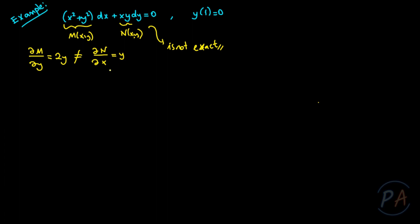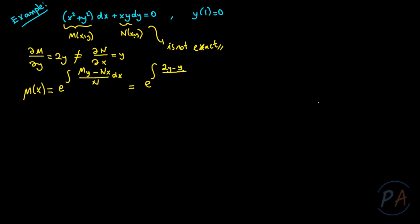Let me check if there exists an integrating factor μ(x) = exp(∫(∂M/∂y − ∂N/∂x) / N dx). Let me write it as exp(∫(2y − y)/(xy) dx), which equals exp(∫1/x dx), and that equals exp(ln x), which equals x. That means I have determined an integrating factor μ(x) = x.